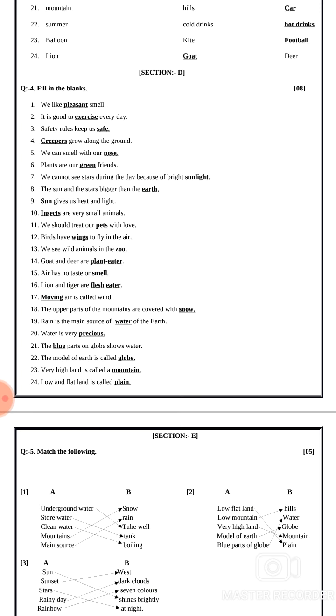Nine number: sun gives us heat and light. Answer is sun. Ten number: insects are very small animals. Answer is insects.